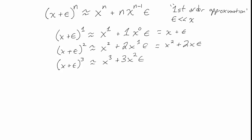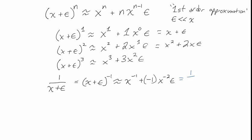The nice thing about this formula is that it works even when n is not an integer or when n is a negative number. For example, 1 over (x plus epsilon) can be written as (x plus epsilon) to the negative first. That approximates to x to the negative first plus (negative 1) times x to the negative second times epsilon, which gives 1 over x minus epsilon over x squared. It's useful to keep these pieces separate and be very careful about signs when applying this formula.